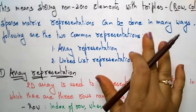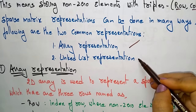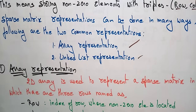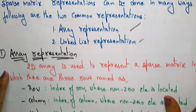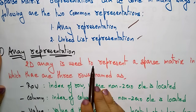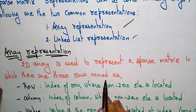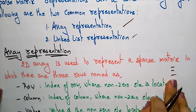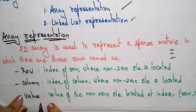The sparse matrix can be represented in many ways. The two common representations are array representation and linked list representation. For array representation, a two-dimensional array is used to represent a sparse matrix in which there are three rows — row, column, and value — that is, triples.